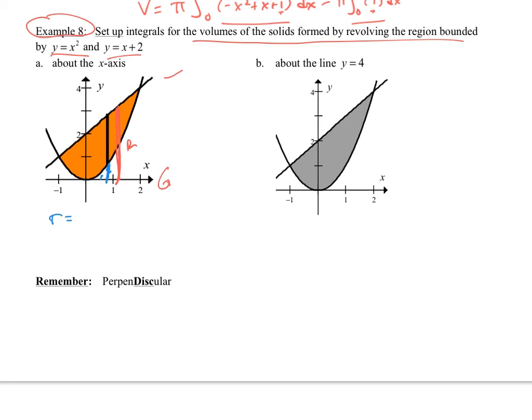So little r is going to be the curve, which is x squared. And then I'm going to subtract off zero. Top minus bottom. Big r is going to be the other curve, which is the x plus two minus the bottom, which is the zero.